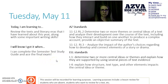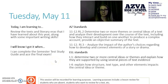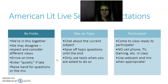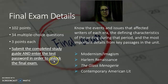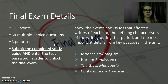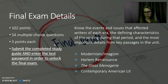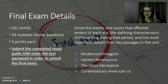You're going to be reviewing the text and literary eras that you've learned about this year, along with some important writing skills. You'll know you've got it when you can complete the semester study guide and the final exam. Exam details: 102 points, 34 multiple choice questions worth three points each. You will submit the completed study guide and enter the test password, which includes the password from yesterday's review as well as the one at the end of this session.